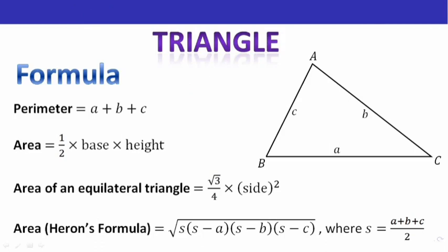Here are the formulae you need to learn. We have triangle ABC whose measurements are given as AB and C. The length of BC is A, length of AC is B, and length of AB is C. The perimeter of this triangle with sides A, B and C equals A plus B plus C. For area, there are three formulae. One is half into base into height. Another is the area of an equilateral triangle — root 3 by 4 into side squared — which is only for equilateral triangles, where all sides are equal.